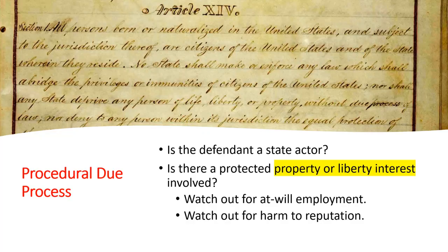Once you get past that — assuming it's the government, state or federal or a subdivision of a state, that has been unfair in a procedural way to your client — before we get into the nuts and bolts, the elements of what due process means, you have to show there's been a deprivation of life, liberty, or property, or that there is a threatened deprivation of life, liberty, or property. Taking away somebody's life obviously means the death penalty — that's a rare case. So in order to be entitled to procedural fairness, the government has to take away your life, liberty, or property. What does liberty mean? What does property mean? Those are questions you have to answer before we get to what process you get.